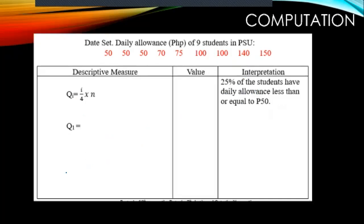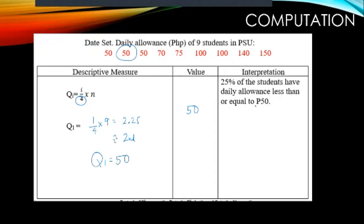For quartile, the denominator is always 4 and i ranges from 1 to 4. To find the 1st quartile: (1/4) × 9 = 2.25, which rounds to the 2nd value. Getting the 2nd value in the data set gives 50. Interpretation: 25% of the students have daily allowance less than or equal to 50. That ends the discussion — good luck with your activity.